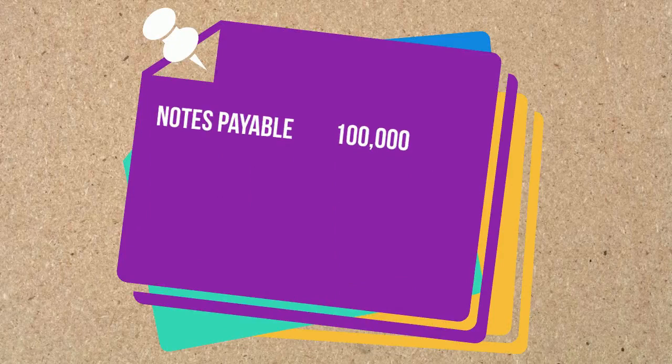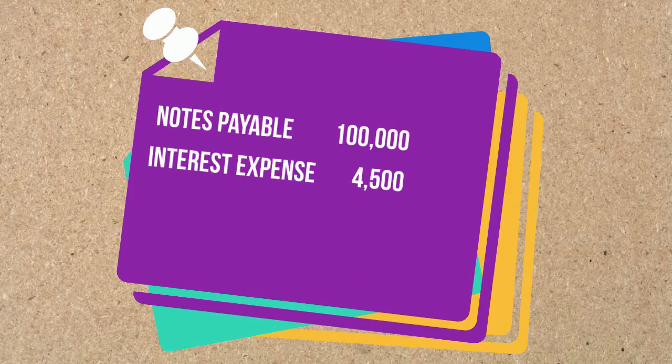To record the payment of the note, we debit notes payable for $100,000 — we only record the principal in the note account, so that's all we remove from it, and we're paying it off in full. We also debit interest expense for $4,500, since this is the cost of borrowing the money. Finally, we credit cash for $104,500 — the total amount paid.